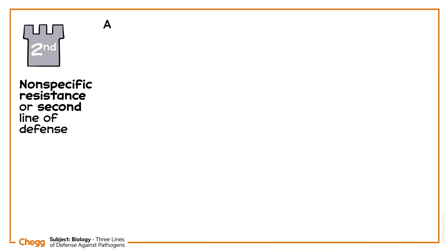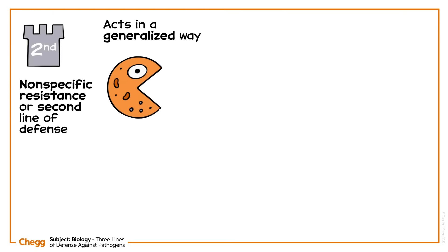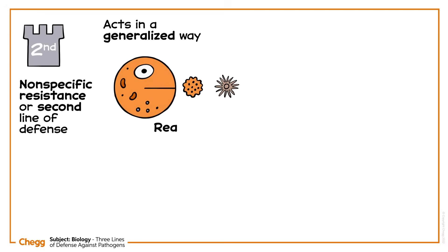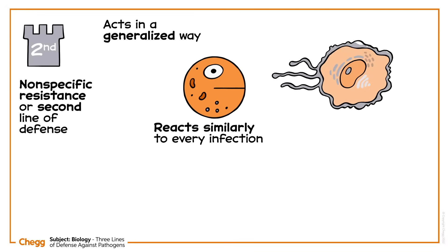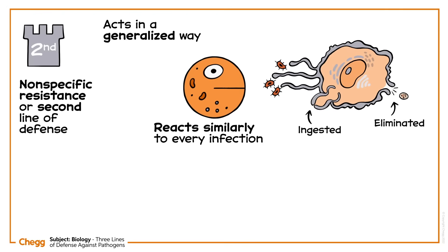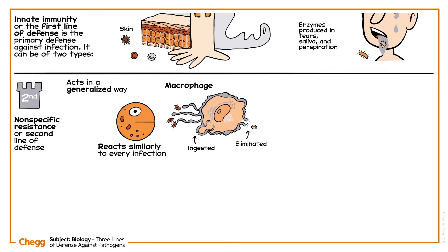Now let's talk about the second line of defense: non-specific resistance. It acts in a generalized way without targeting specific pathogens, as it does not recognize distinct pathogen types and reacts similarly to every infection. Pathogen-centered bodily tissues are ingested and eliminated by phagocytic cells. For instance, monocytes give rise to cells called macrophages, a type of white blood cell.